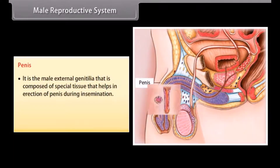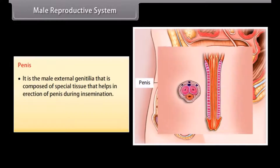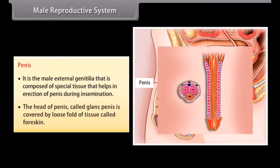The penis is the male external genitalia, composed of special tissue that helps in erection during insemination. The head of the penis, called the glans penis, is covered by a loose fold of tissue called the foreskin.